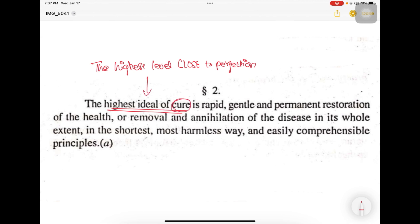The highest level close to perfection that one can attain in cure. So this is what Hahnemann is trying to tell us. In this aphorism, Hahnemann gives us the qualities of an ideal cure. Now what are these qualities?